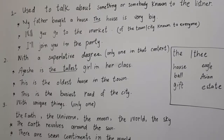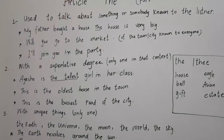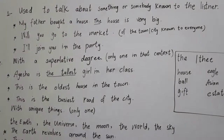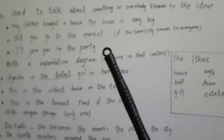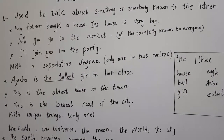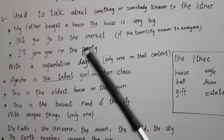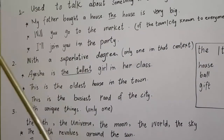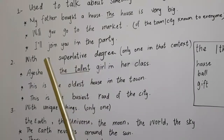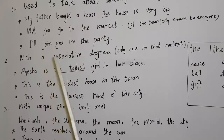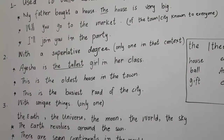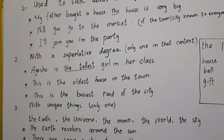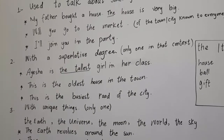Another example: 'Will you go to the market?' Here we use 'the market' because we know which market — the market of the town or city, known to everyone. Similarly, 'I will join you in the party' — because both 'I' and 'you' know which party, at what time; we are only discussing that.